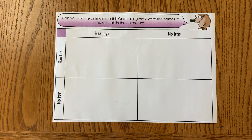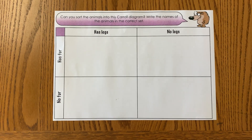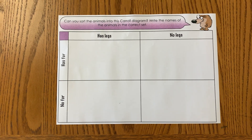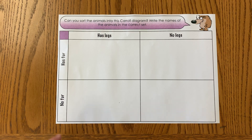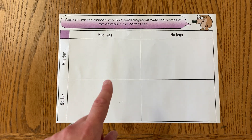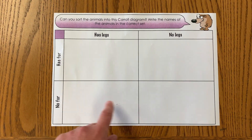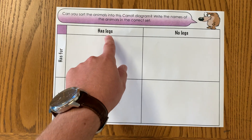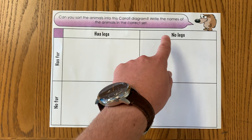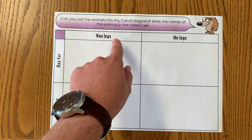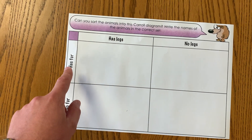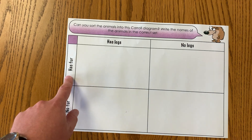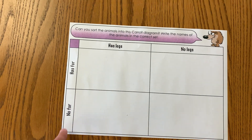Hi guys, this is a Carroll diagram which you're going to have a go at using — you can make your own, but I've printed one out. It's got four boxes, and then: no legs, has legs, has fur, doesn't have fur. So you can see that they're opposites, each one.